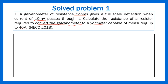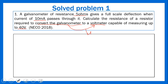Looking at this question, the first thing to determine is what you are converting to. Here we are converting the galvanometer to a voltmeter, so we need to use a multiplier. Bring out the multiplier formula: RM = V/IG − RG.